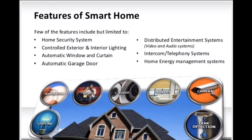For example, we have the home security system, which includes cameras and you can see your home using your phone or laptop. We also have controlled exterior and interior lighting — you can switch the lights on or off using your mobile. We have automatic windows and curtains that open or close automatically, and also automatic garage doors, which have become very common in recent years.